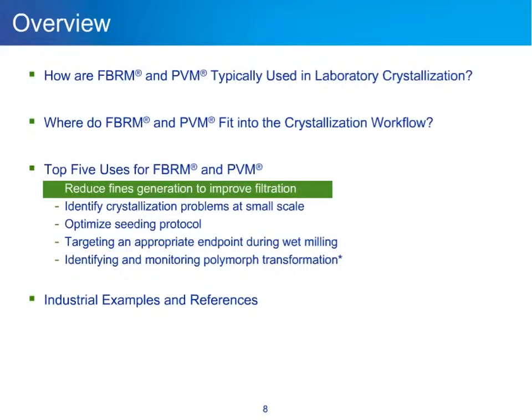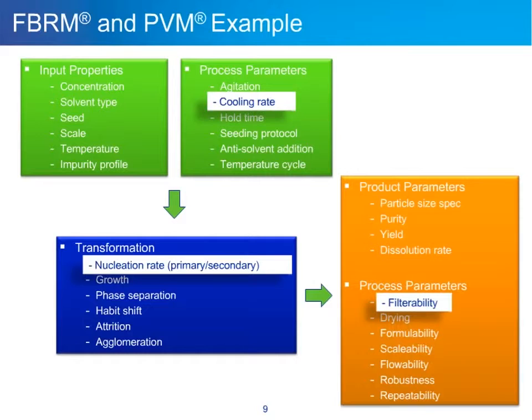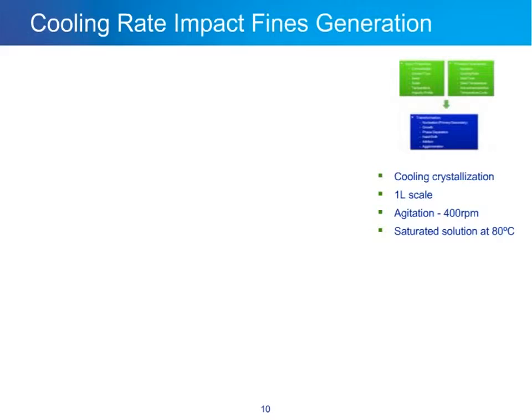Our first top-five example is reducing fines generation to improve filtration. The example focuses on changing the cooling rate while keeping everything else constant. This impacts the nucleation rate, which subsequently impacts filterability. We'll look at how exactly FBRM and PVM provide the information that ultimately leads to a more filterable process.